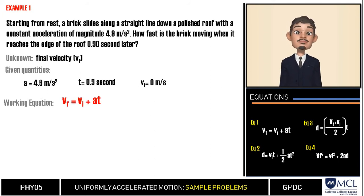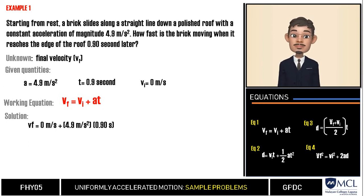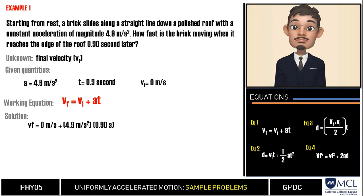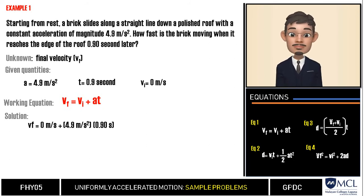Now we can substitute the given values. Final velocity is equal to zero, our initial velocity, plus 4.9 meters per second squared, our acceleration, then multiply by time which is 0.92 seconds. Very important in solving any physics problem is to include the units in the quantities for you to see which unit cancels the other and that your final unit is attained.